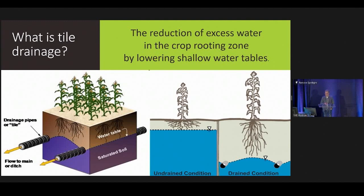Very basically: what is tile drainage? It's simply the reduction of excess water in the crop rooting zone by lowering shallow water tables — that's a pretty important concept. Tile drainage is the placement of perforated pipes underground, typically below the rooting zone. If those pipes aren't intercepting a water table or saturated soil conditions, they are not an effective practice. The conceptual image on screen shows: on the left, a water table preventing healthy crop root growth, and with tile drainage implementation, it pulls that water table down, allowing crop roots to reach the depth needed to grow a healthy plant.